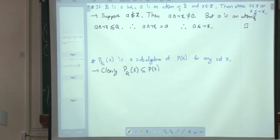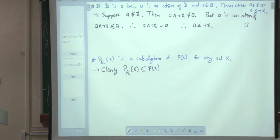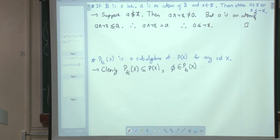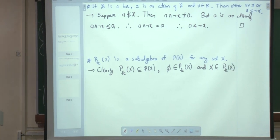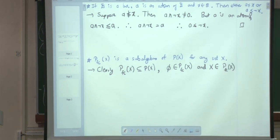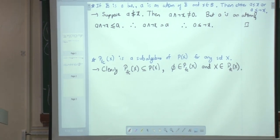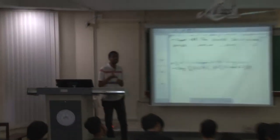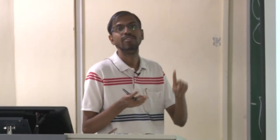It should contain the same 0 and 1. The empty set is in PFCX because it is finite. X is also in PFCX because it is co-finite — its complement is empty, so its complement is finite, making it co-finite. We have now verified that PFCX is a subset containing the same 0 and 1.